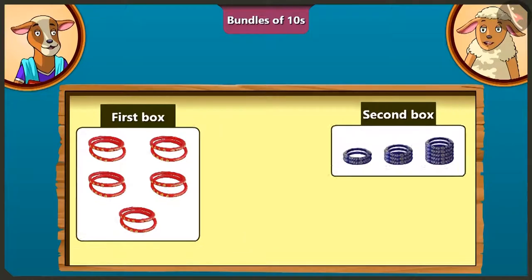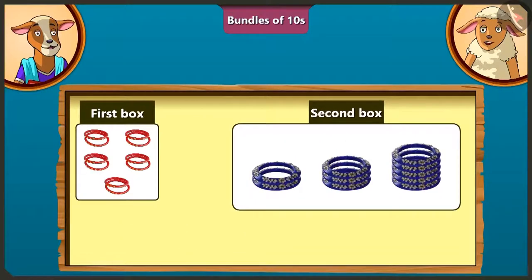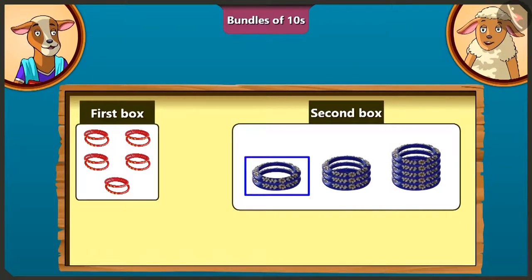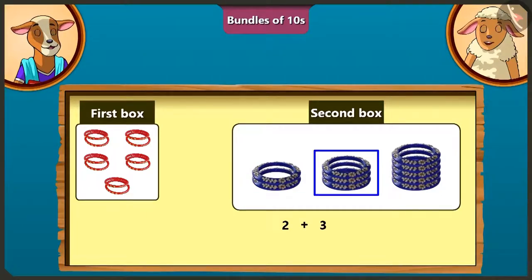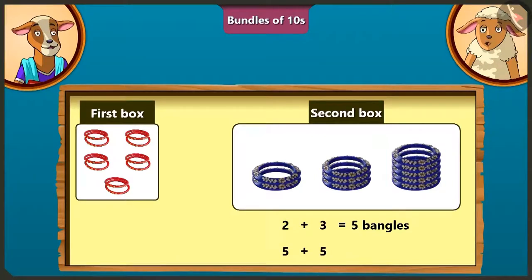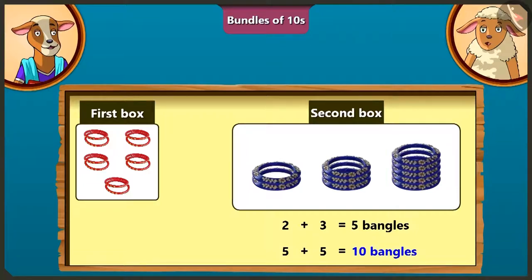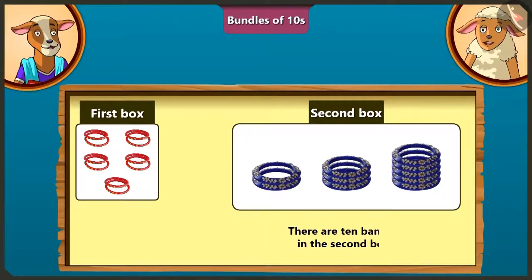Now I will count the second box the same way. You count. There will be 5 bangles if we add 2 bangles of the first row and 3 bangles of the second row. And if we add 5 bangles of the third row to these 5 bangles, then there will be total 10 bangles in the second box. So there are 10 bangles in total.